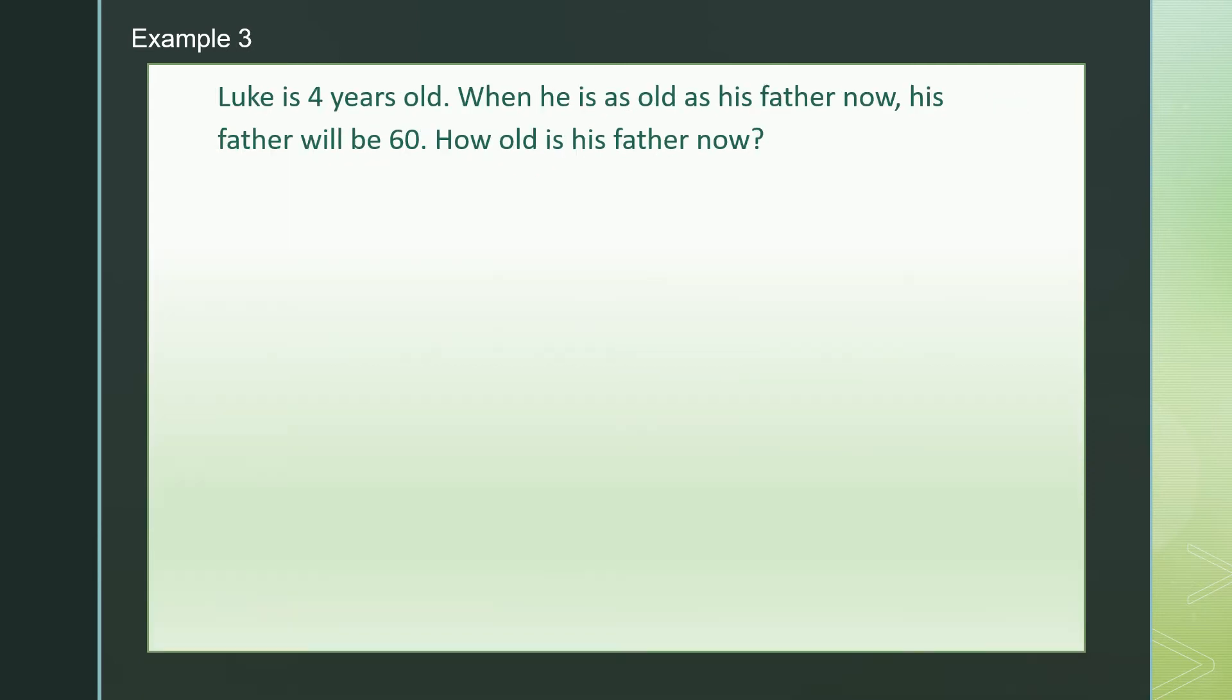Luke is 4 years old. Father is X years older than Luke, so father is 4 plus X years old now. When Luke is as old as his father now, that would be X years later. Then father will also be X years older. Then father will be 60. 4 plus 2X equals to 60.